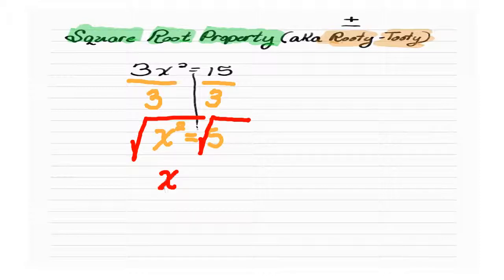What you have to remember here is that it's not just the square root of 5, but it is plus minus the square root of 5. You got to do the rooty tootie dance.